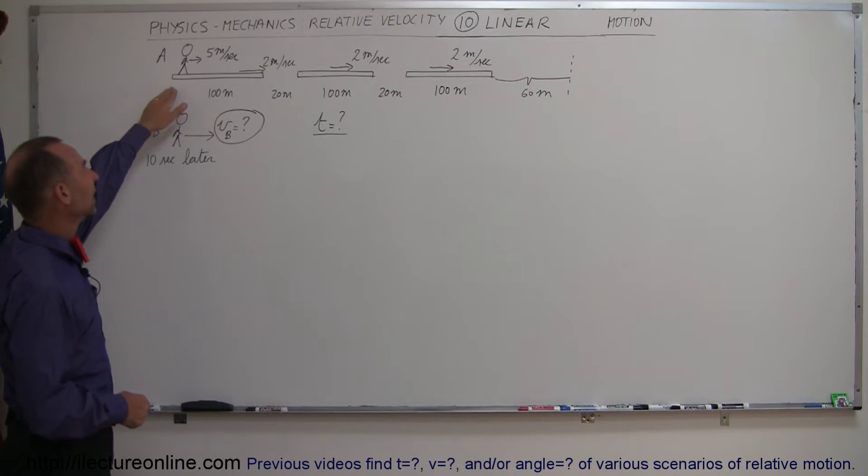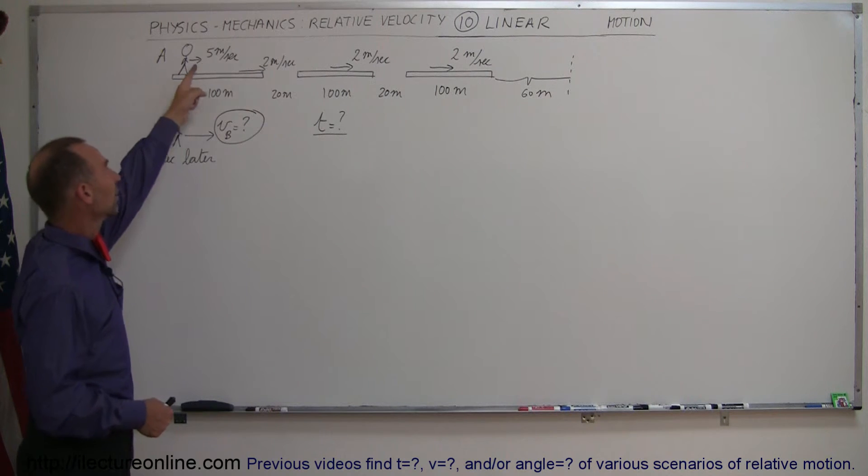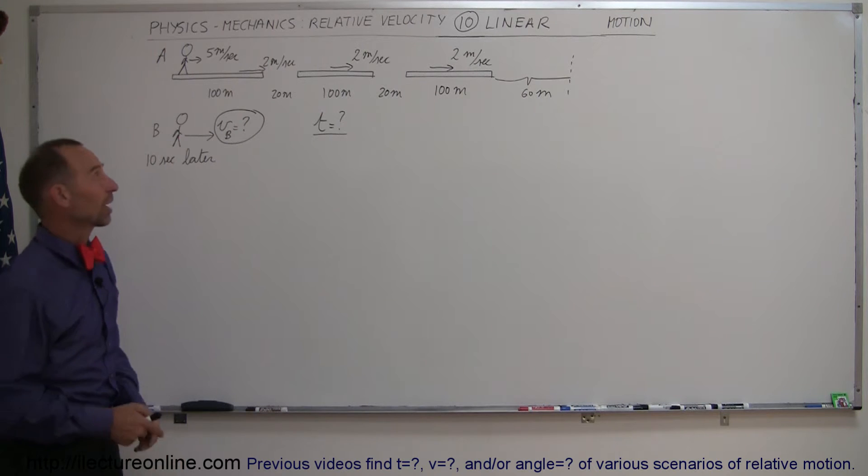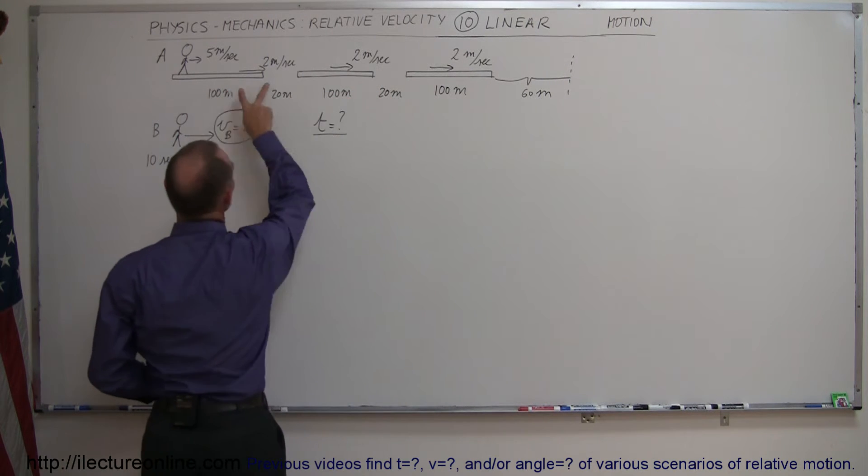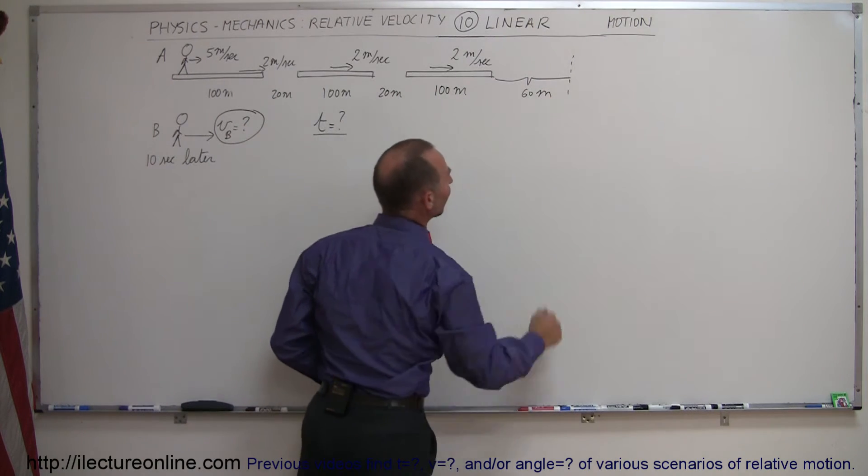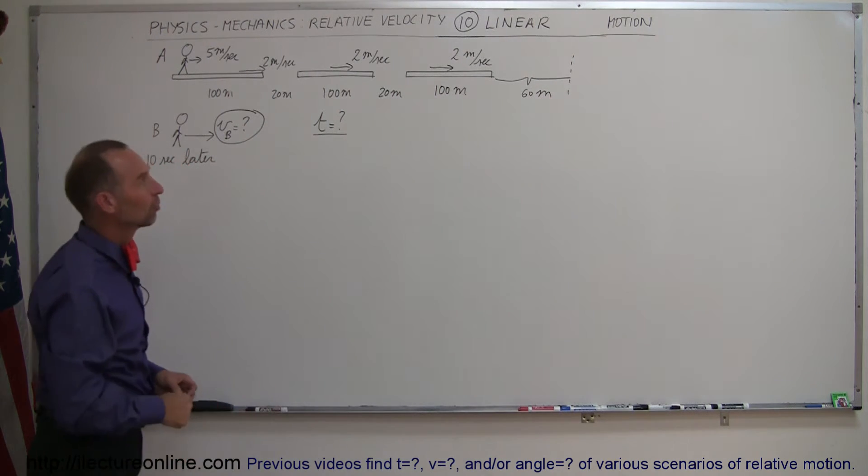But let's say that the passenger A is kind of late and wants to rush so he's running, and every time he steps on a belt he's running at 5 meters per second when the belt is moving at 2 meters per second. The belt sections are 20 meters apart, each of them are 100 meters long, and at the very end another 60 meters to get to the boarding area.